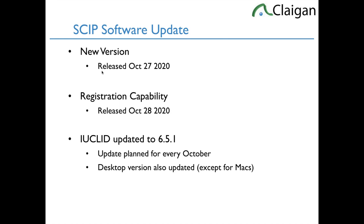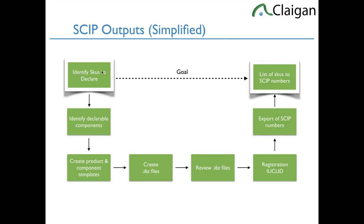So big goals - we're a big fan of outputs. In this case, the final output is not registered products. It is your SCIP numbers - the registration numbers for your registered products that you can provide to the next people in the chain. The end goal is not product registration; the end goal is the SCIP numbers for registered products. There are a lot of steps in between.